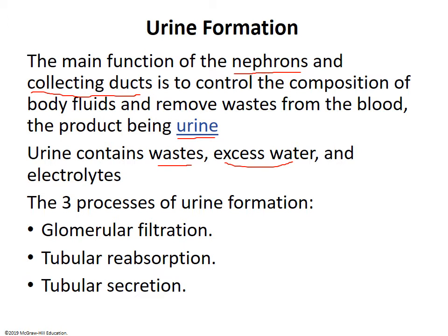The kidneys also regulate electrolytes, especially hydrogen ions. When you think of hydrogen ions, think of pH — the H is always capitalized because pH is all about the concentration of hydrogen ions. That's the basic overview. There are three processes involved in forming urine.